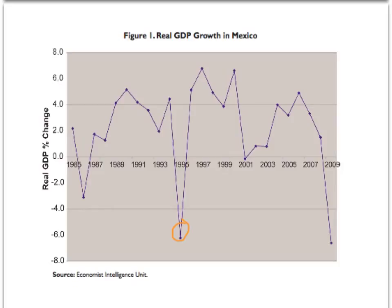GDP fell by 6 percent again in 2000, but again started to improve as the U.S. economy grew in the early 2000s. As is evident from the figure, the global financial crisis has taken a toll on the Mexican economy. In 2009, GDP growth fell by 6.6 percent.